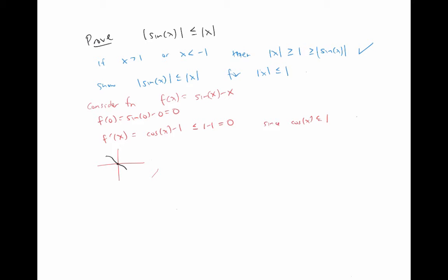So informally, it's going to have to look something like this. In other words, it's going to have to have f of x be bigger than or equal to zero for x negative, and f of x is going to be less than zero for x positive.